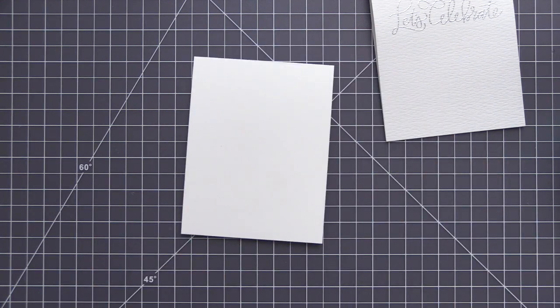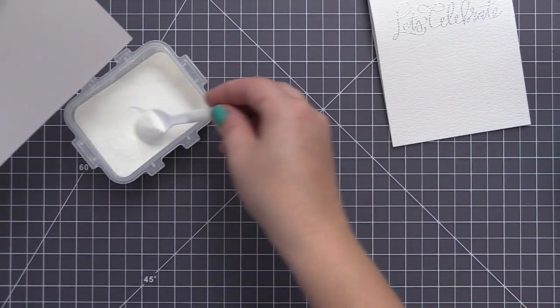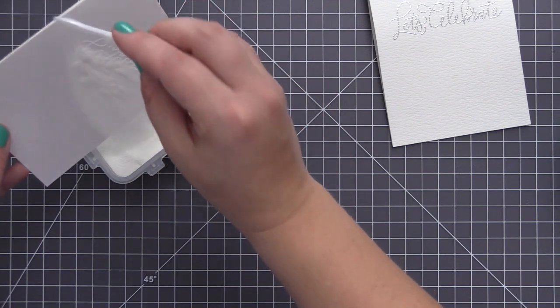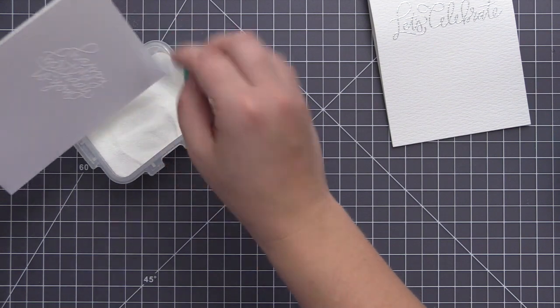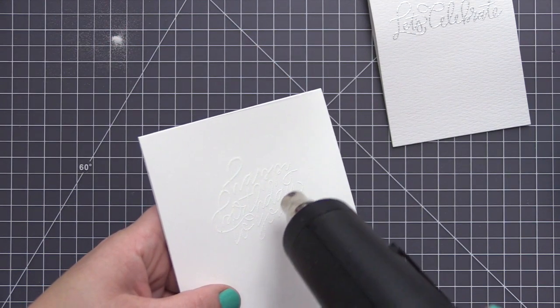We're going to do two different cards with two different embossed resist techniques. So rather than doing them separately, I'm going to do all the embossing at once. So I have another card base here. This is just a white regular smooth card base.